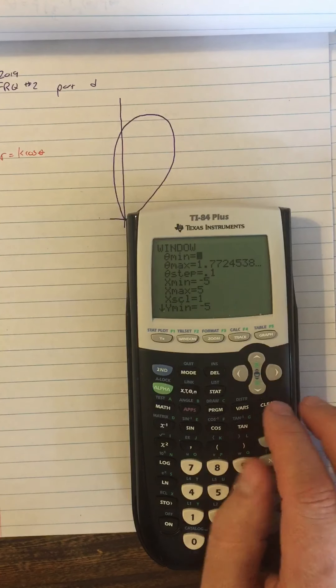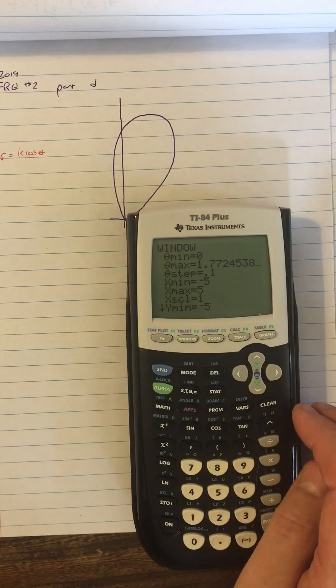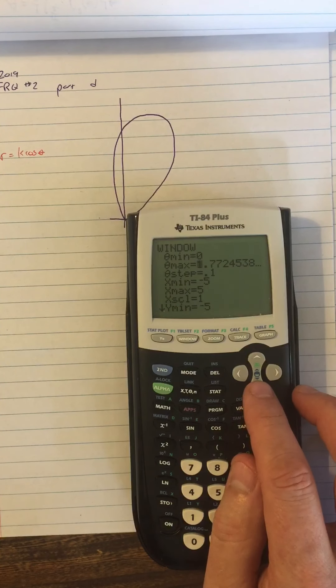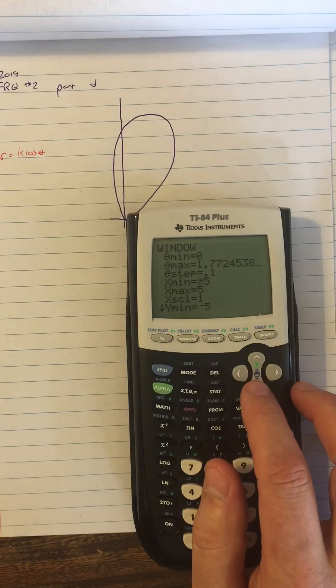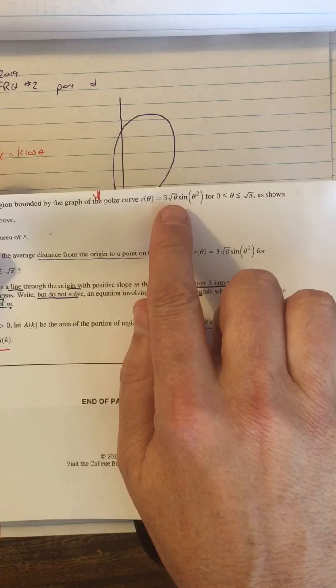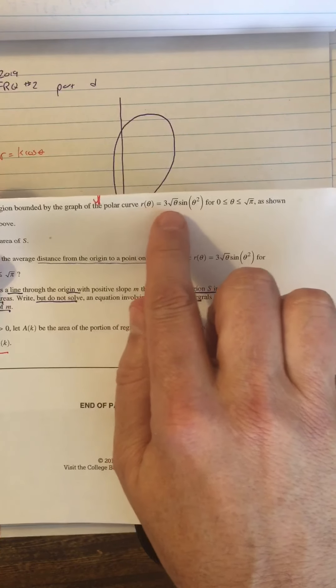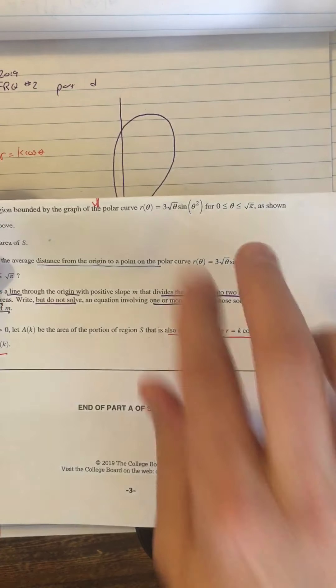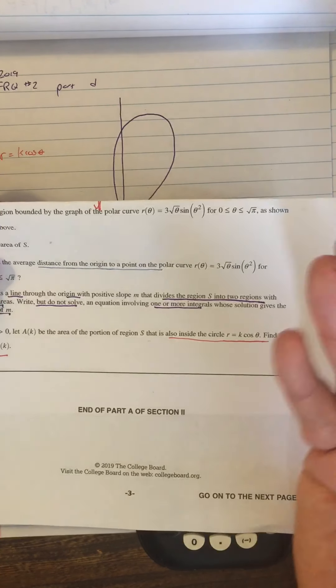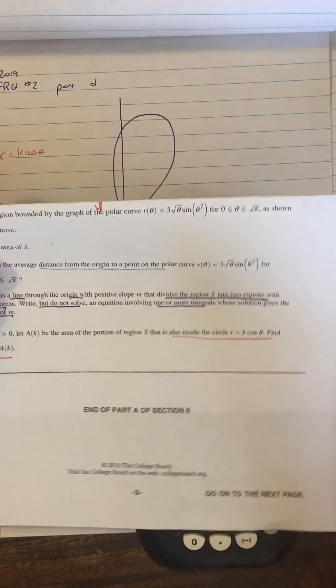This weird looking theta max is actually the square root of pi. And then I wasn't sure what to set the x min and x max. I guessed negative five to five, just based on we've got three times the square root of theta times the sine. So it's going to be as much as three, but square root of theta, that's going to go up to like pi or something. So it's a little hard to get a handle on exactly what this is going to be. So I guessed five.